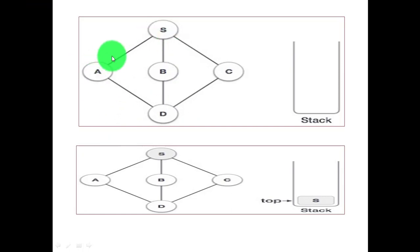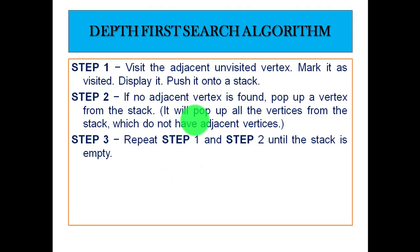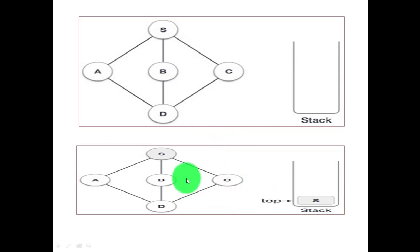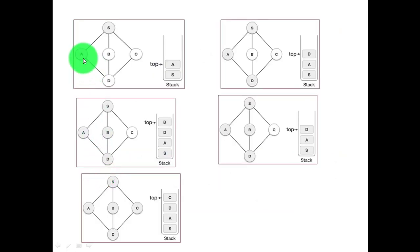This is the graph: S, A, B, C. About the adjacent vertices, for S, A, B, C are adjacent. This is our stack. Our first element is S. The first step is pushing S to the stack. Its adjacent nodes—suppose I'm considering this part—so A. I will push A to the stack. In stack we have a pointer known as top, and that is pointing to the topmost element.